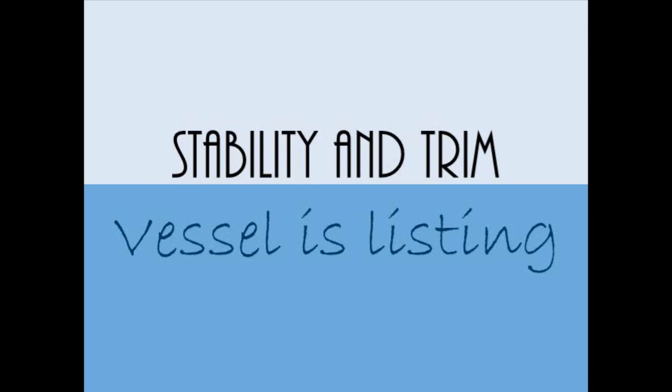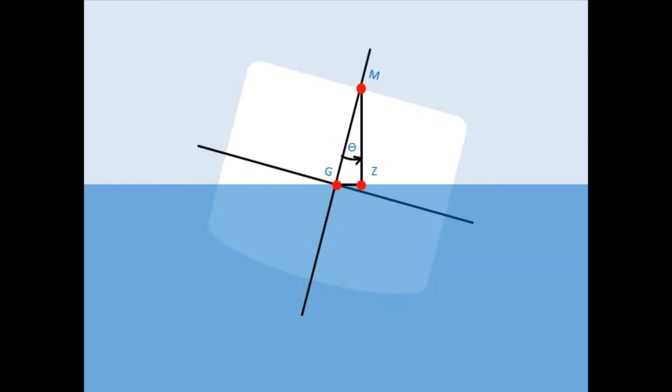Listing means that the vessel is inclined due to the greater weight upon one side. Through this triangle GZM, we can create an equation.